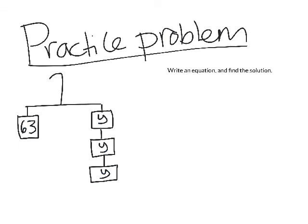For your practice problem, write an equation and find the solution for this hanger method model where I have 63 on one side balanced by three y's on the other. Figure out what each y is worth.